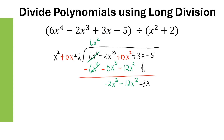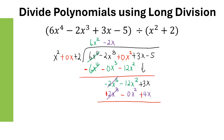Take negative 2X cubed divided by X squared — that gives negative 2X. Multiply: negative 2X times the divisor gives negative 2X cubed plus 0X squared minus 4X. When we subtract, change all the signs to positive, negative, and positive respectively. 2X cubed cancels out, leaving negative 12X squared plus 7X. Bring down the last term, which is negative 5.